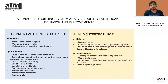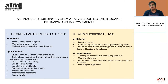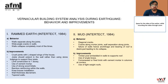Vernacular building system analysis during earthquake behavior and improvements. The walls separate along the joints, wide-angle cracks can be seen in the walls, and walls collapse completely most of the time during an earthquake. Improvements include: crest joints with L-shaped wings at the corners of the house; joists should extend into the wall rather than using stone lodgings to support floor joists; limiting construction to one storey; use of cement mortar; use of strong wood lintels; bamboo reinforcing within the walls; knee braces in corners; and wall thickness decrement with tapered walls.